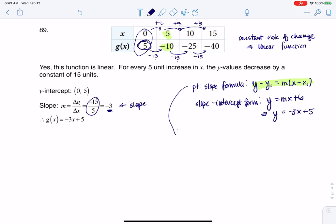So if I continue off of this, I could have had y minus negative 10 equals negative 3 times x minus 5. And let's start simplifying that. That would be y plus 10 equals negative 3x plus 15. And then when I subtract 10 from both sides, sure enough, I get y equals negative 3x plus 5.